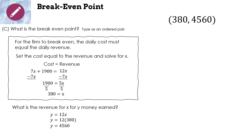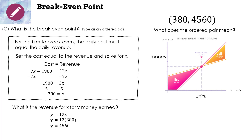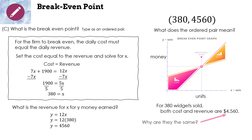Here is our ordered pair: (380, 4560). The ordered pair is always in parentheses. X is the number of widgets we need to make, and y is the amount of money we make. For 380 widgets sold, both cost and revenue are $4,560 — because it's the break even point. To break even, the manufacturer is not going to have a profit or a loss. They need to make 380 widgets and their revenue will be $4,560.